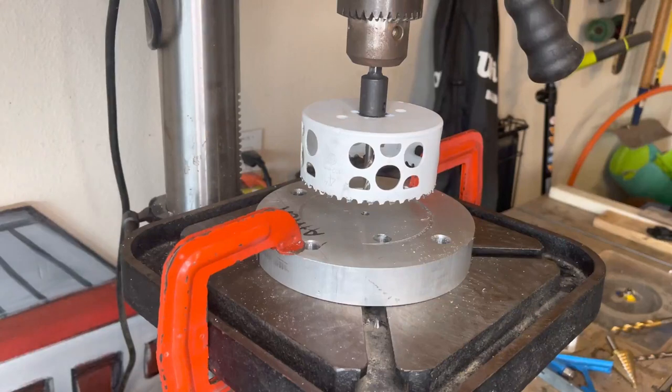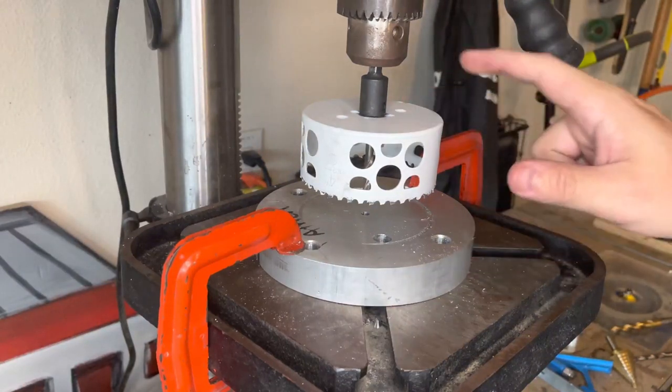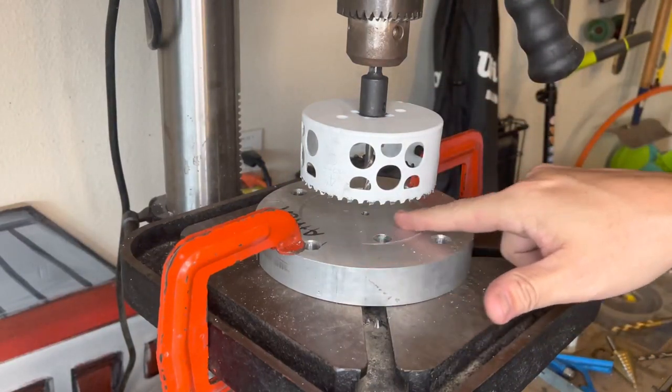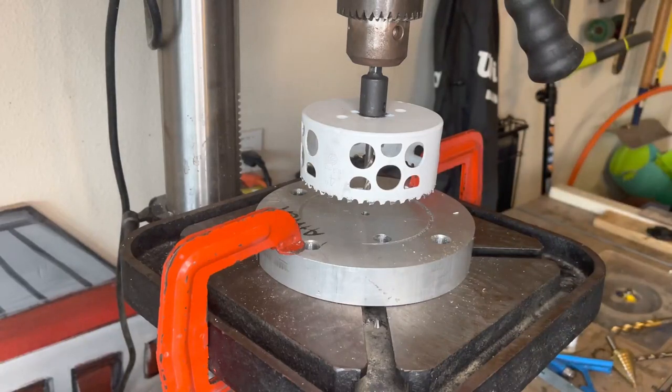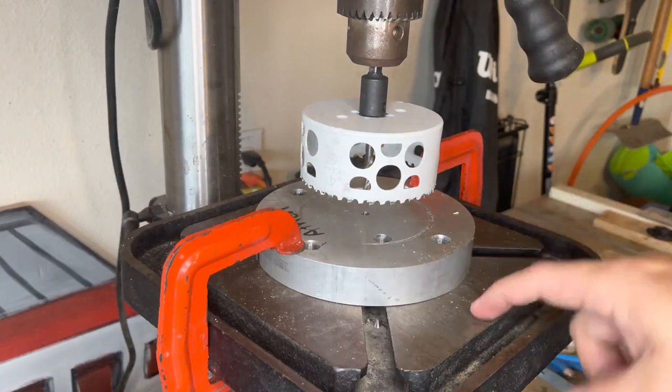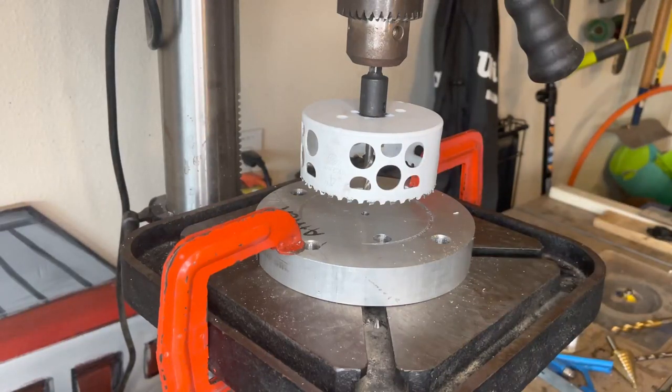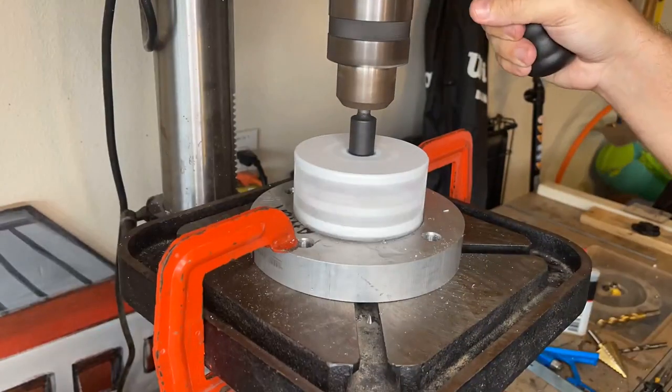So I switched back to the 4 inch hole bit and now we'll try and go about halfway down and then we can flip it over since we have that pilot hole bit and go from the other side. That way I don't risk going right into my drill press table here.